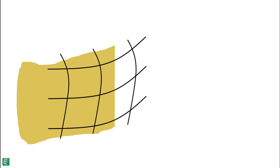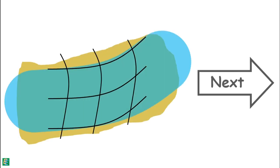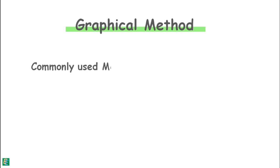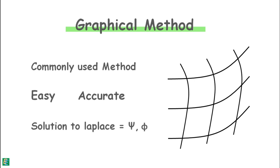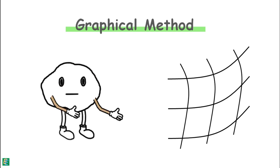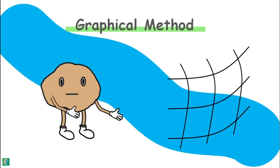We try to obtain our flow net for two-dimensional flow using the graphical method. This is the most commonly used method of flow net construction because it is easy and provides nearly accurate results. This method is one of the solutions of the Laplace equation. Let us understand this method by drawing a flow net for a hydraulic condition — a soil mass of some thickness lying upon an impermeable strata, with a sheet pile driven into the soil to some depth.